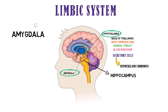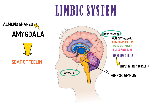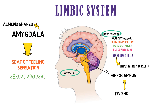The amygdala are almond-shaped structures located on either side of the thalamus. The amygdala is the seat of feelings. The amygdala functions to associate sensation with pleasure and punishment, and is involved in sexual arousal due to the emotions which are part of this process. The hippocampus consists of two horns that curve back from the amygdala, and is important to long-term memories.